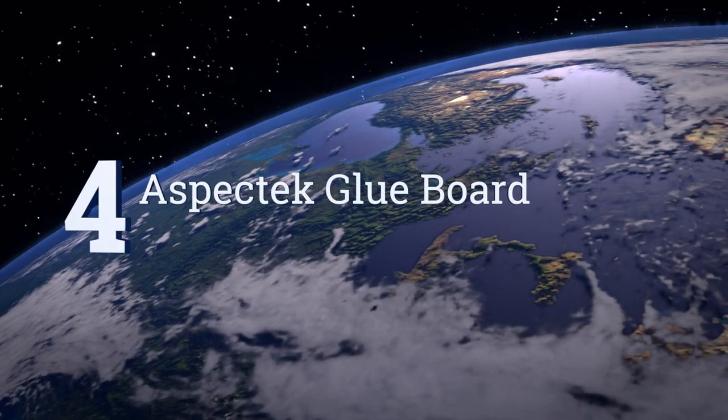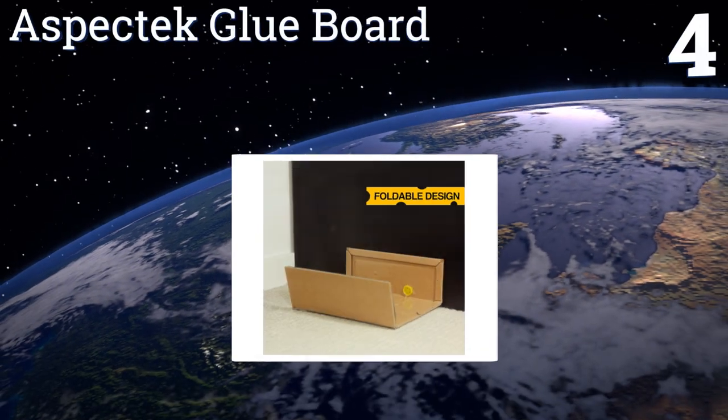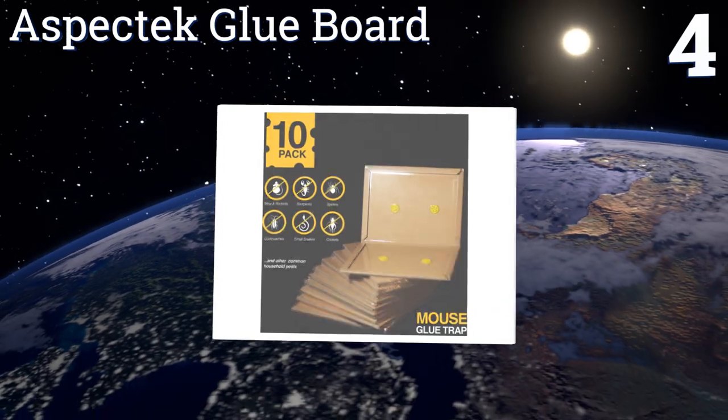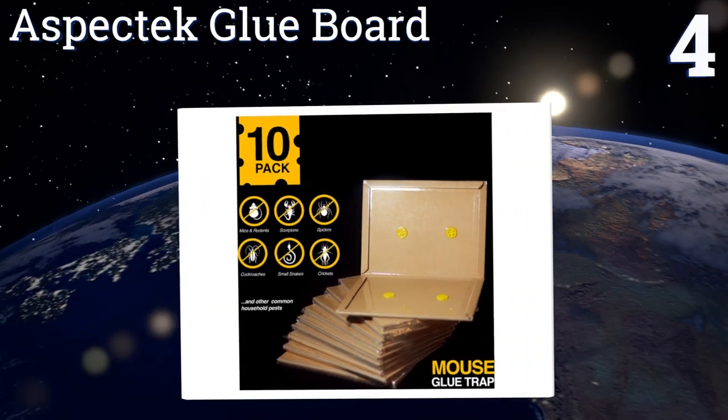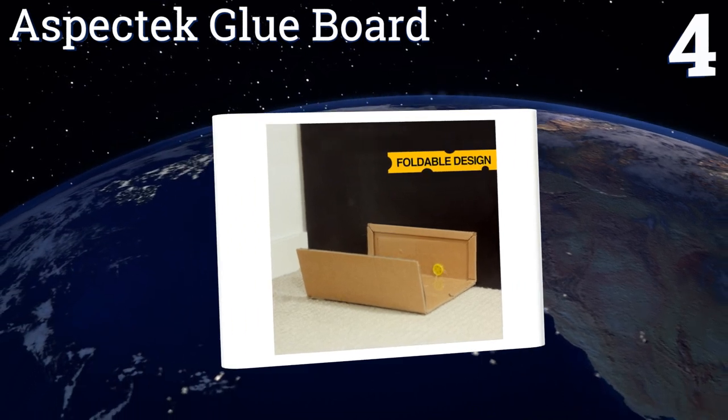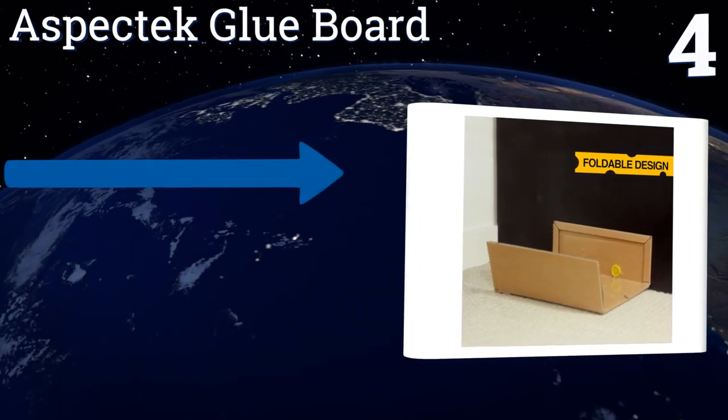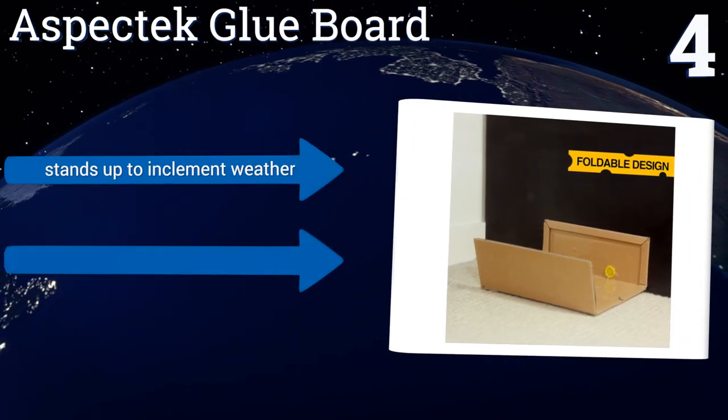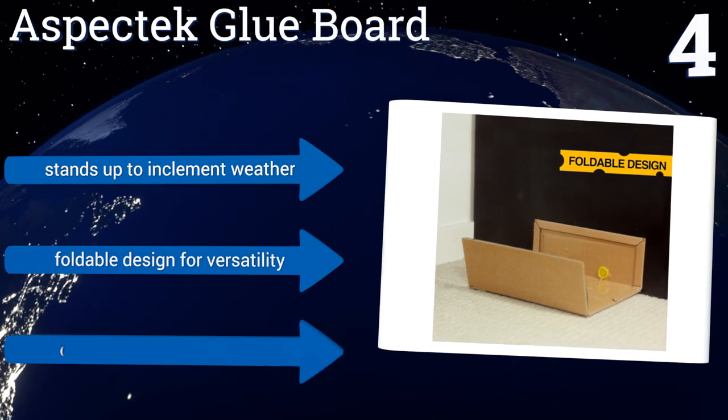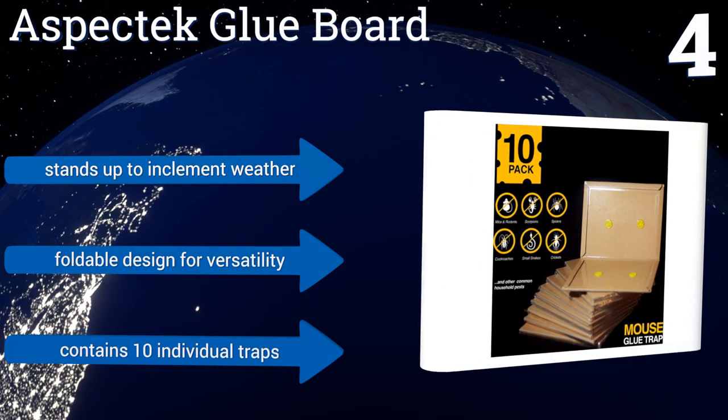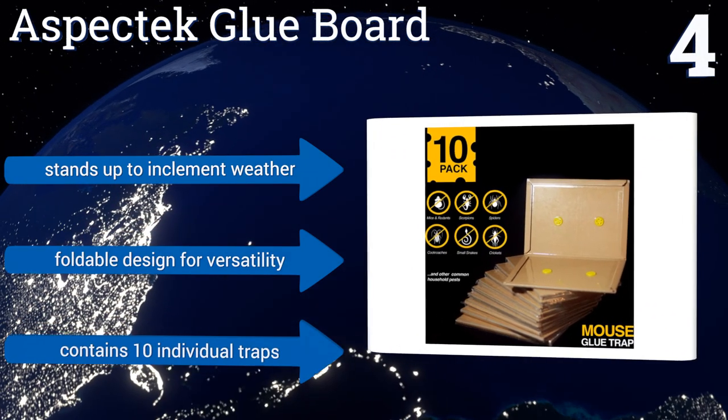At number four: relax, you're not the only one who craves peanut butter – pesky rodents love it too. That's what makes the Aspectek Glue Board so effective, as it's pre-baited with a peanut butter scent that will attract mice, insects, and other pests. It stands up to inclement weather and comes in a foldable design for versatility. Each order includes 10 individual traps.